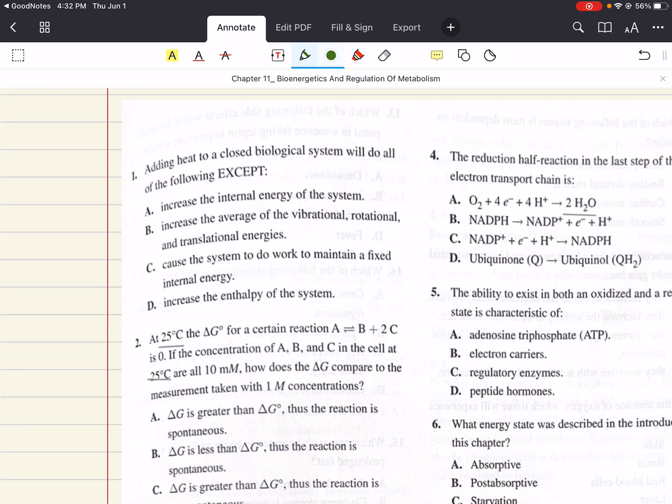Problem 1 says adding heat to a closed biological system will do all of the following except blank. A says increase the internal energy of the system. B says increase the average of the vibrational, rotational, and translational energies. C says cause the system to do work to maintain a fixed internal energy. And D says increase the enthalpy of a system.